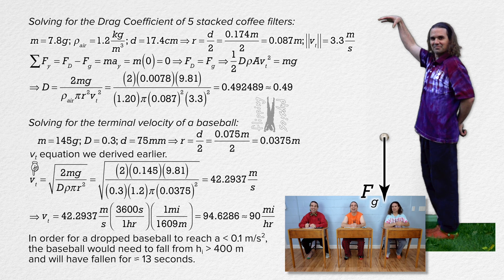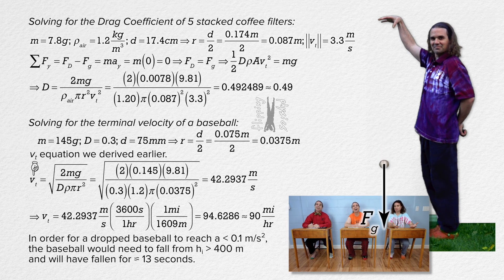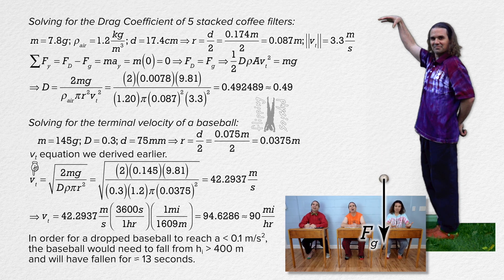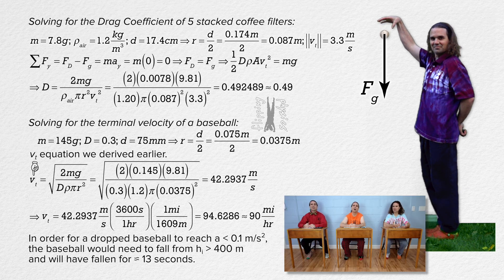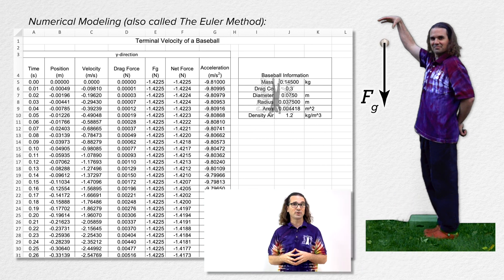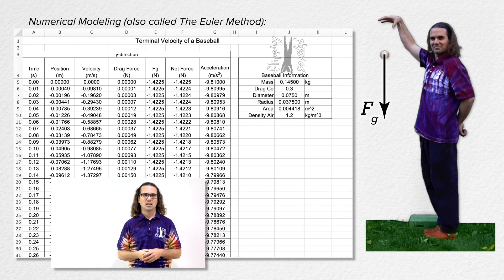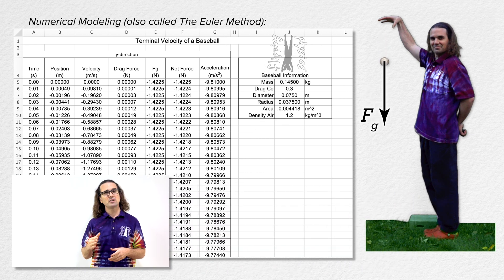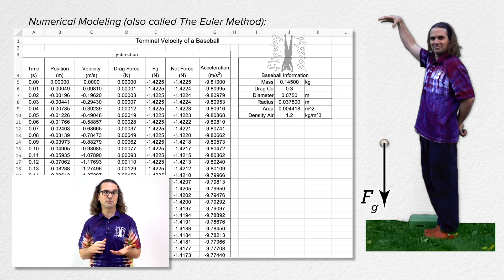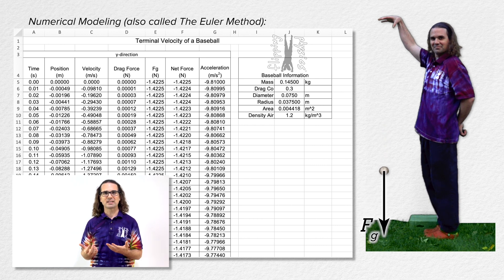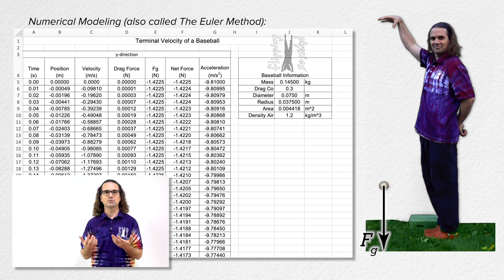But how were those calculations done if this is not uniformly accelerated motion? Numerical modeling was used. Numerical modeling is what we will go over next time. An Excel file for the calculations is included on the webpage for this lecture. You will understand the calculations much better after watching the next video about numerical modeling.